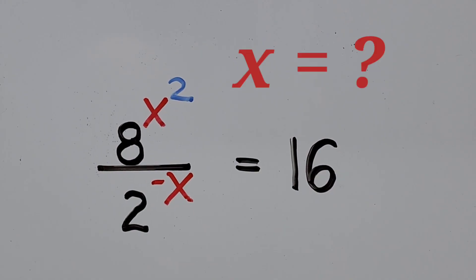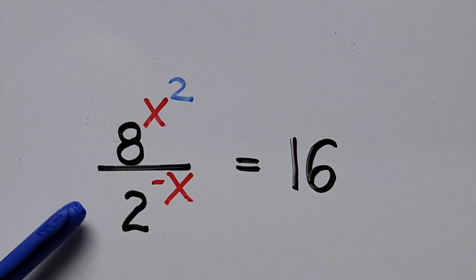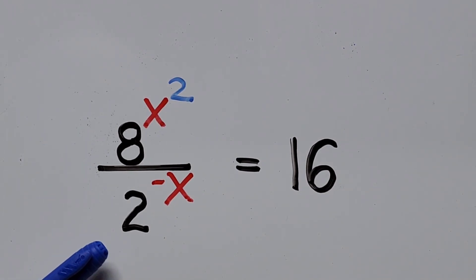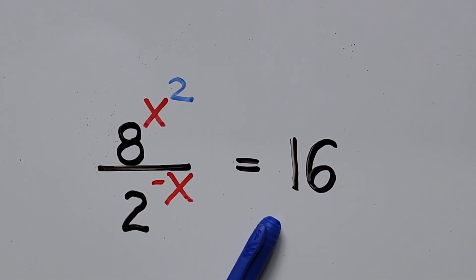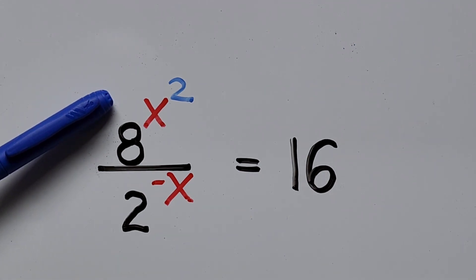Hello everyone! We have here an exponential equation: 8 to the power of x squared divided by 2 to the power of negative x equals 16. We are solving for the value of x.